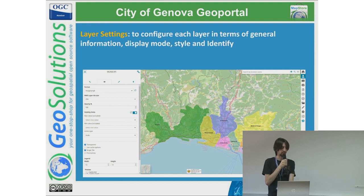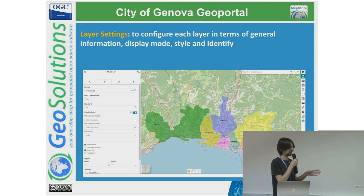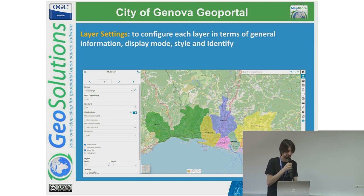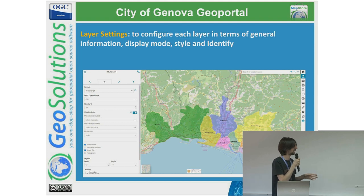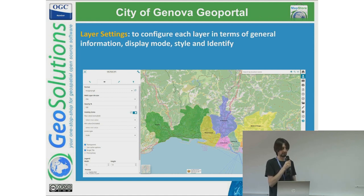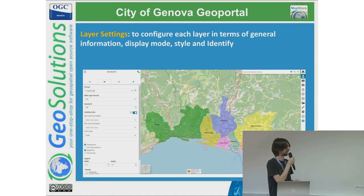Work has also been done on layer settings. You can see the display panel, where there are many functionalities. Based on their deep integration with GeoServer, we allow applying vendor parameters, such as those related to the internationalization of styles and those related to caching. We also get information through WMTS to apply the correct tile grid to the layer and get the correct behavior from the GeoWebCache system.